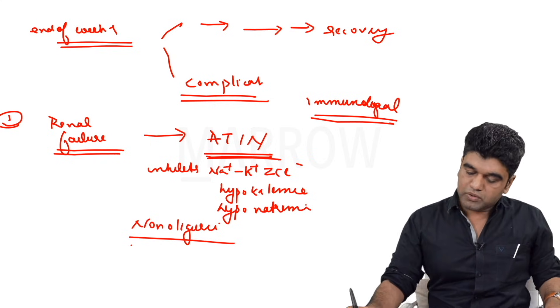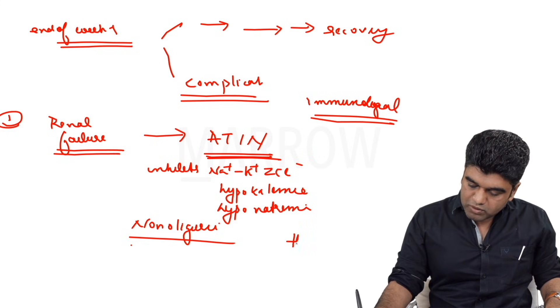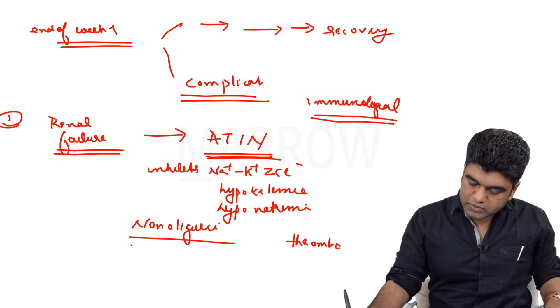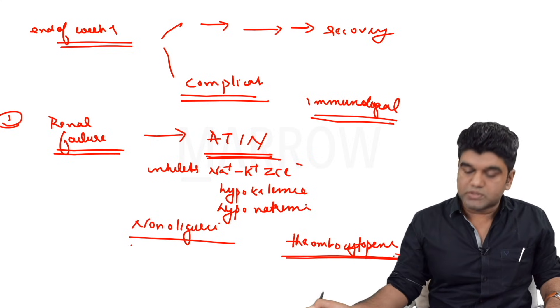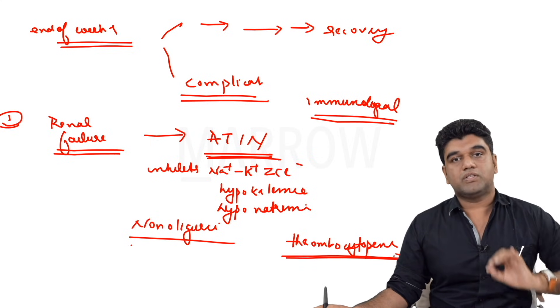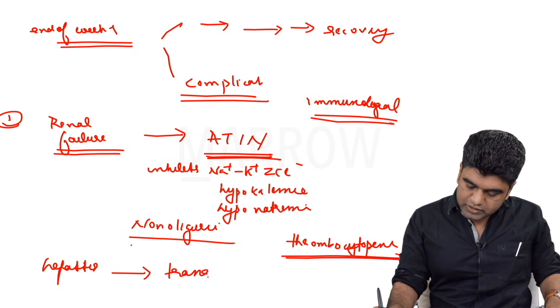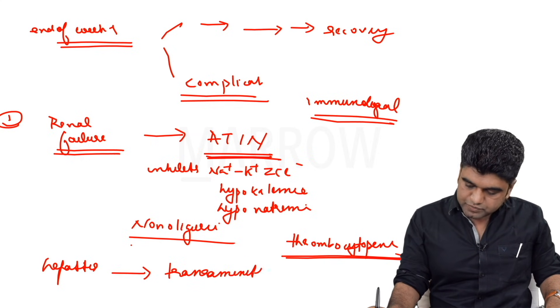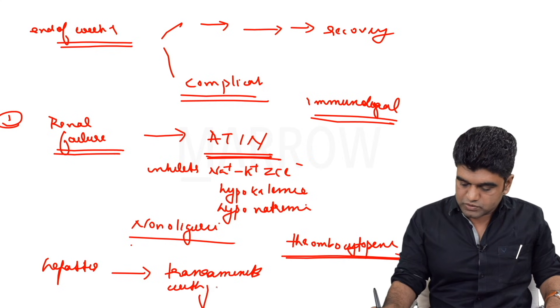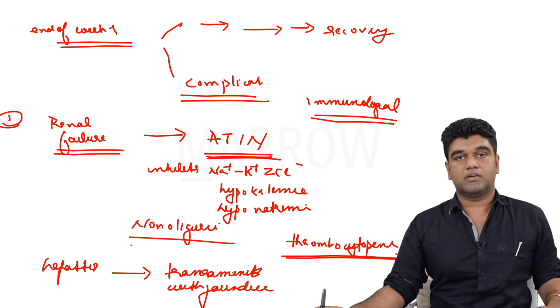So AKI patient who is a non-oliguric AKI patient having hypokalemia and hyponatremia in a tropical setting, the first thing that has to come to your mind is leptospirosis. There is absolutely no doubt about it. Many patients have immunological destruction of platelets, so thrombocytopenia goes hand in hand. Majority of these patients will have some degree of hepatitis, that's why transaminitis with jaundice is also seen.